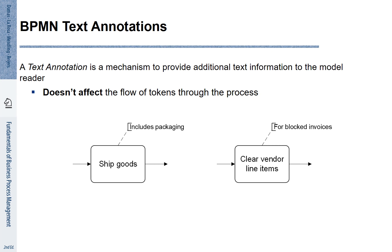On the left hand side, we see that the activity SHIP GOODS has an annotation that says INCLUDES PACKAGING. In this way, we can make clear what is the scope of that activity. On the right hand side, we have the CLEAR VENDOR LINE ITEMS activity, and we see, based on the annotation, that it is relevant for blocked invoices.